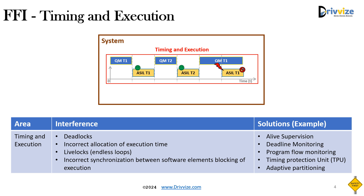FFI related to timing and execution: the QM task and ASIL task will have their own periodicity and scheduling. In an ideal scenario, both tasks will get their own chance for execution. Due to some failure in the QM task, the ASIL task may not get its chance for execution — this is interference related to timing and execution. This can happen due to deadlocks, incorrect allocation of execution time, livelocks, incorrect synchronization between software elements, or blocking of execution.